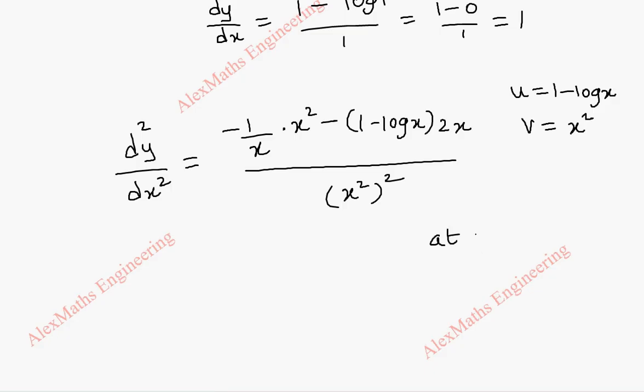So at x equal to 1, after canceling this, we get only minus x. So it is minus 1. When I put 1 here, log 1 is 0. So we have minus of 1 minus 0 and again 2 into 1, which is 2, whole divided by this is x power 4, so 1 power 4.